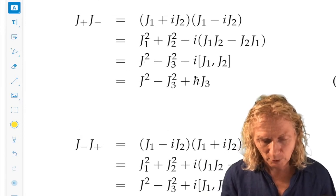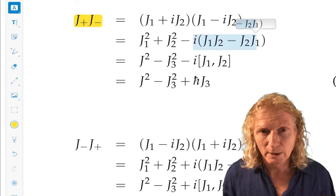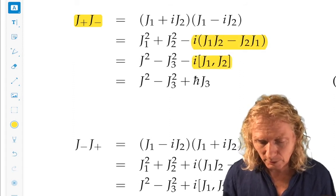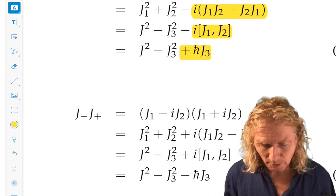Now these last two are just multiplications, but you do end up with a commutator and the commutation relation. The only difference between j-plus j-minus and j-minus j-plus